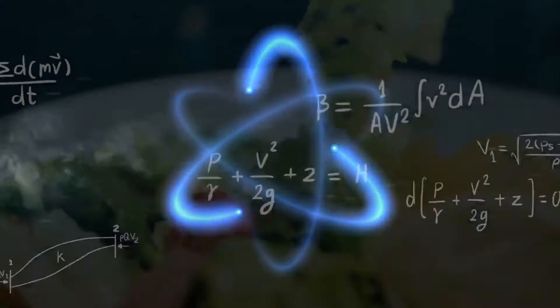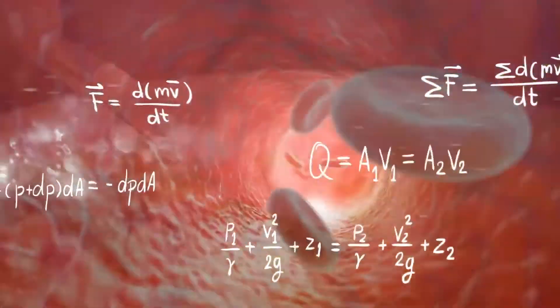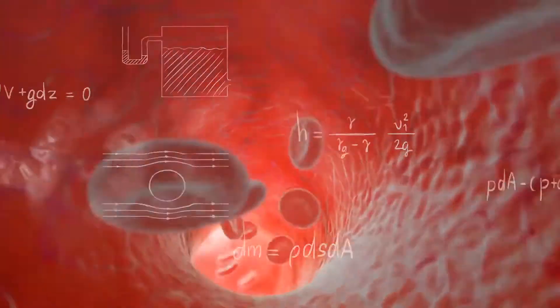Every living thing on the planet gives and receives energy, and that includes every cell in your body too. Ness health is really revolutionary because it provides a signal for the body to heal itself.